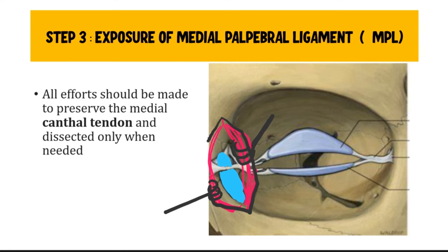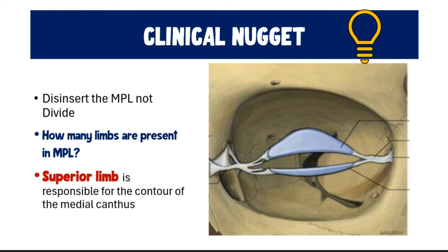As you carry out blunt dissection of the orbicularis, you will encounter a wide glistening structure attached to the anterior lacrimal crest, covering the fundus of the lacrimal sac — that is the medial palpebral ligament. Do not dissect this ligament; instead, disinsert it and reflect it back. The superior limb of the MPL is most responsible for maintaining the contour of the medial canthus. In DCR surgery, we only deal with the anterior limb, so the contour of the medial canthus is usually not affected.